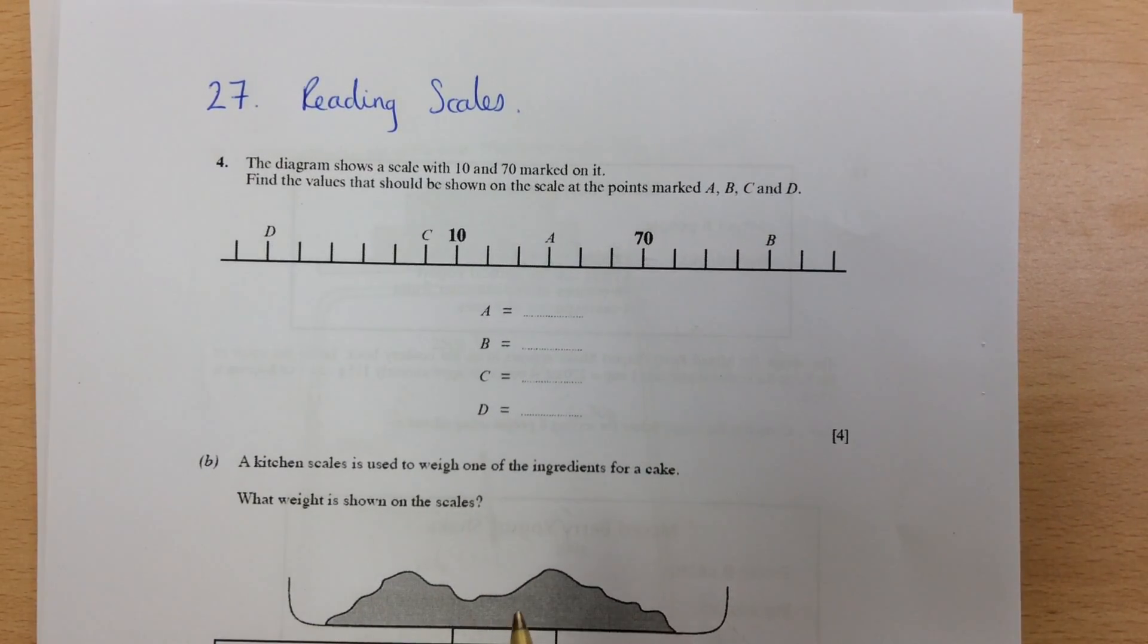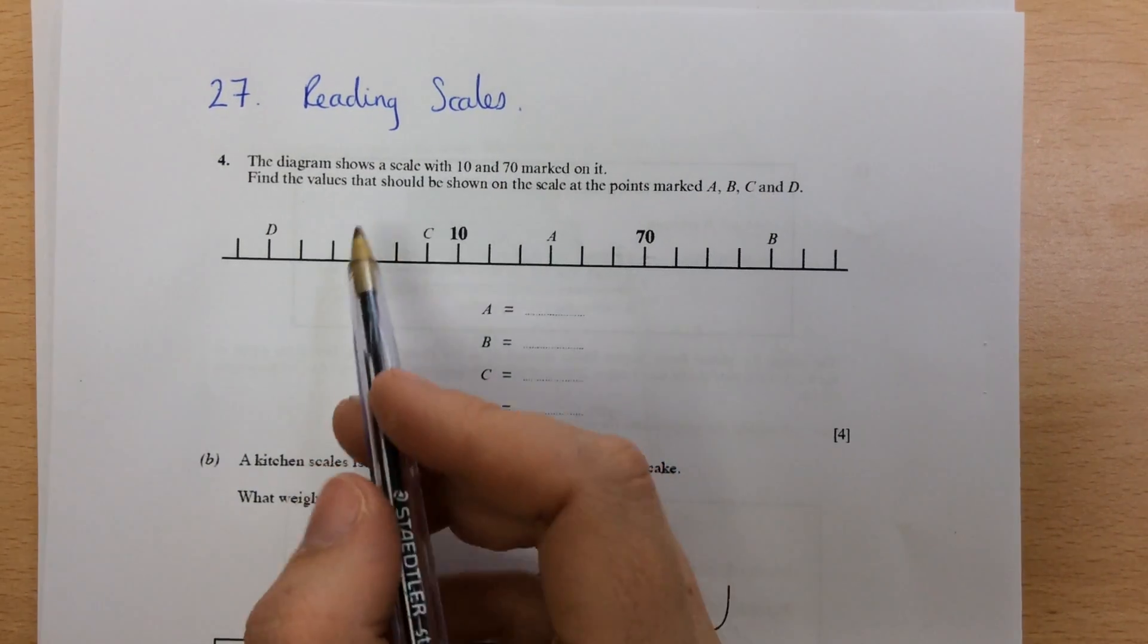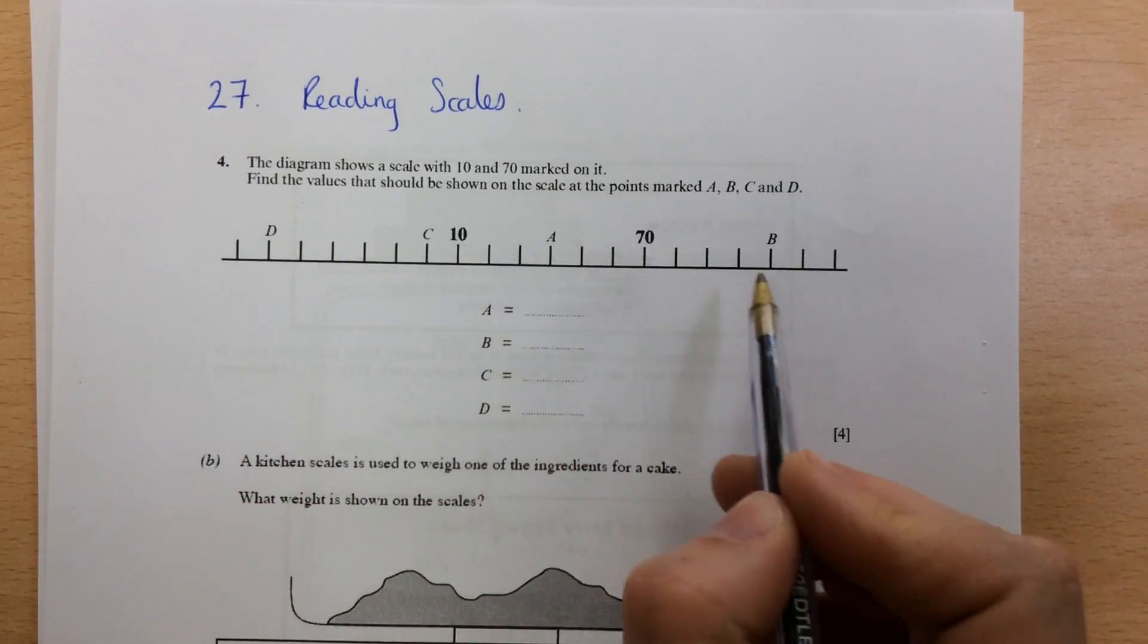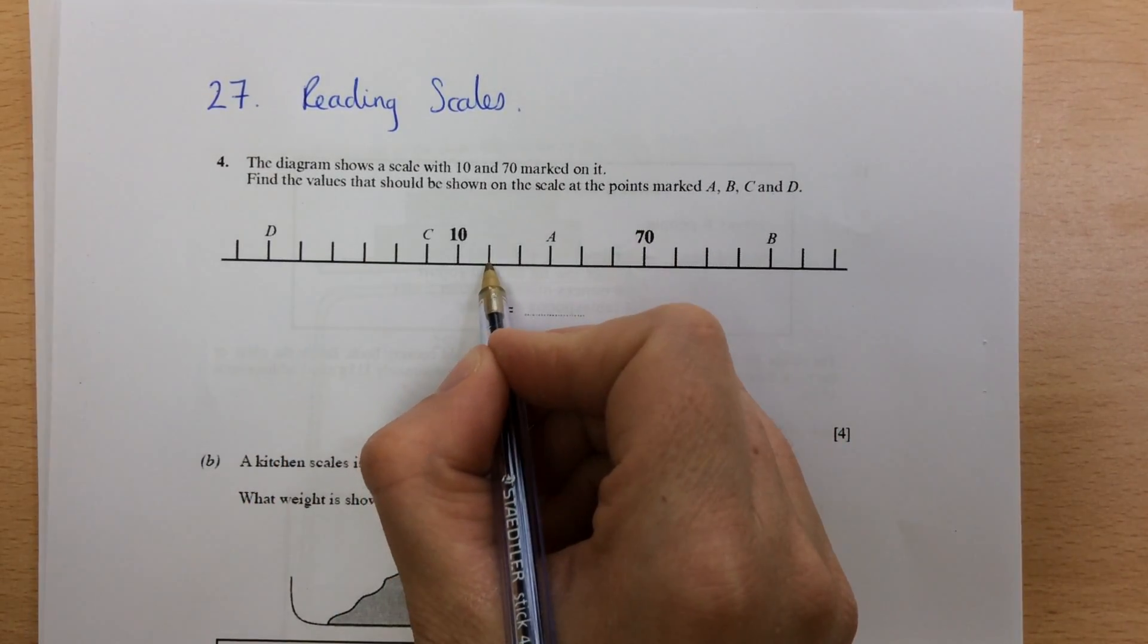Section 27, reading scales. First thing to do on your scales is work out what you're actually going up in and what each bar represents.